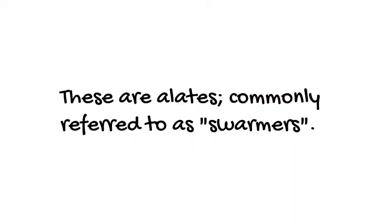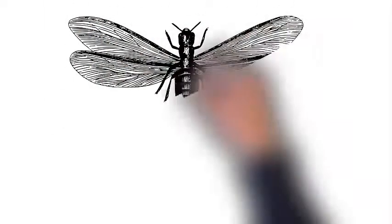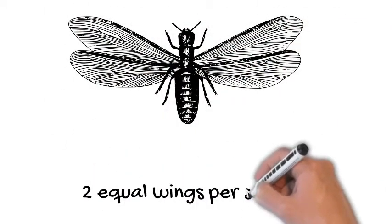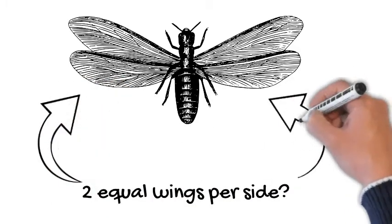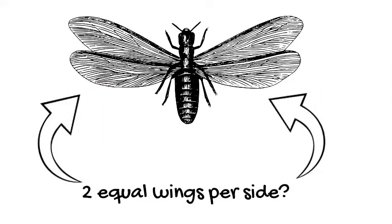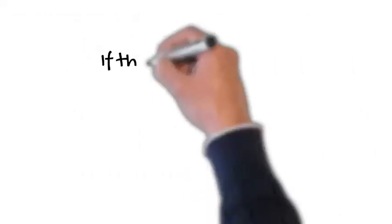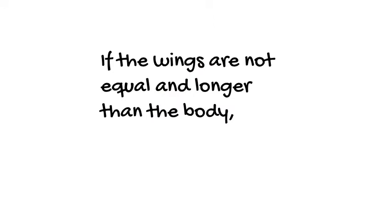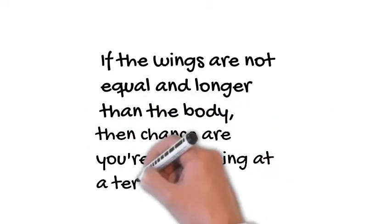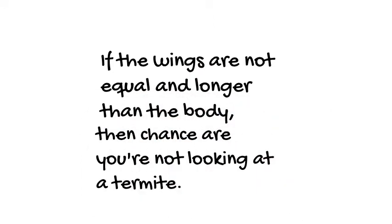These are alates, commonly referred to as swarmers. Alates also have two equal wings per side, and both of those wings are longer than the body. If the wings are not equal and longer than the body, then the chances are you are not looking at a termite.